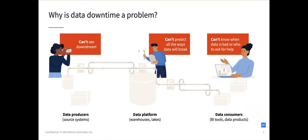The problem Monte Carlo is solving is one we refer to as data downtime — periods of time when your data is missing, erroneous, late, or otherwise unable to be used. The real problem is that data producers who own the source systems can't see downstream. They don't know when they're making changes who those changes can impact, or what reports are built off their data. The analysts or data scientists at the end of the chain, the data consumers, often can't see upstream — so they don't know when they find an error if it's an insight or a pipeline error.